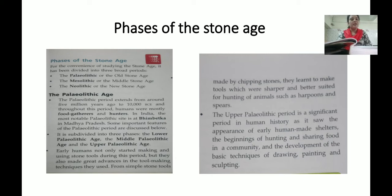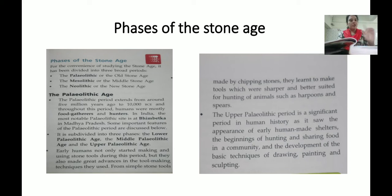Throughout this period, humans were mostly food gatherers and hunters — they gathered edible plants and hunted animals. In India, the most notable Paleolithic site is at Bhimbetka in Madhya Pradesh.